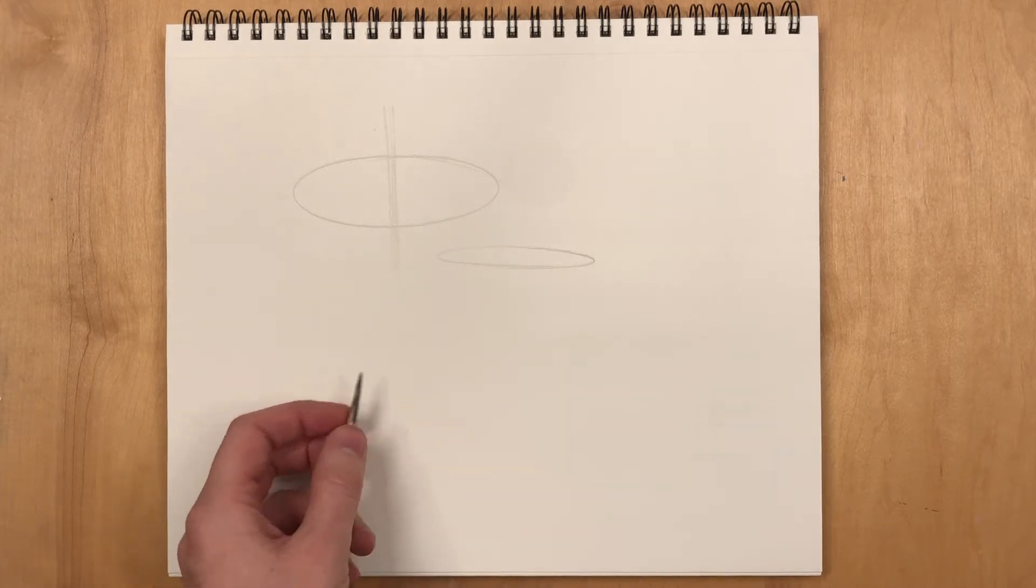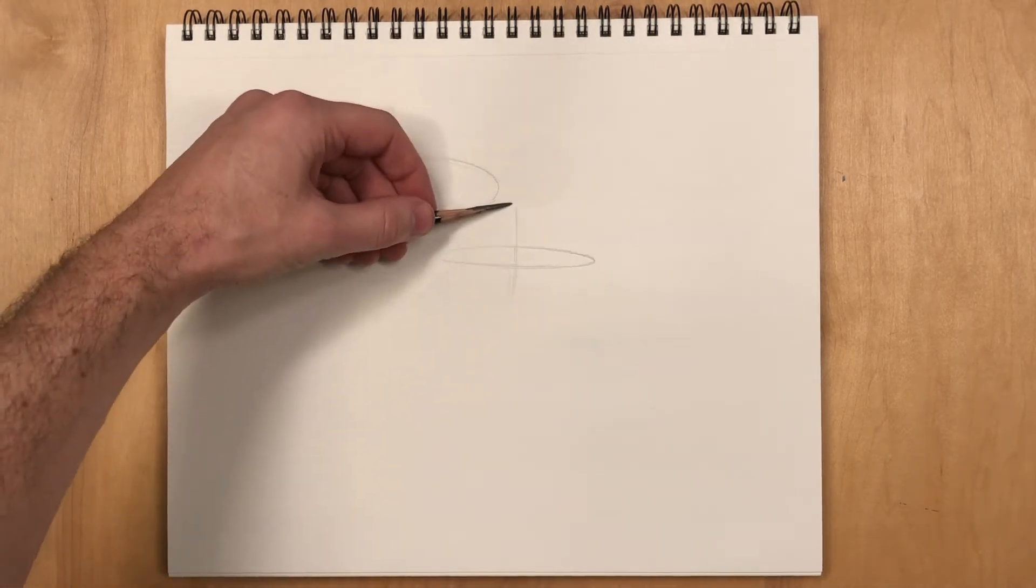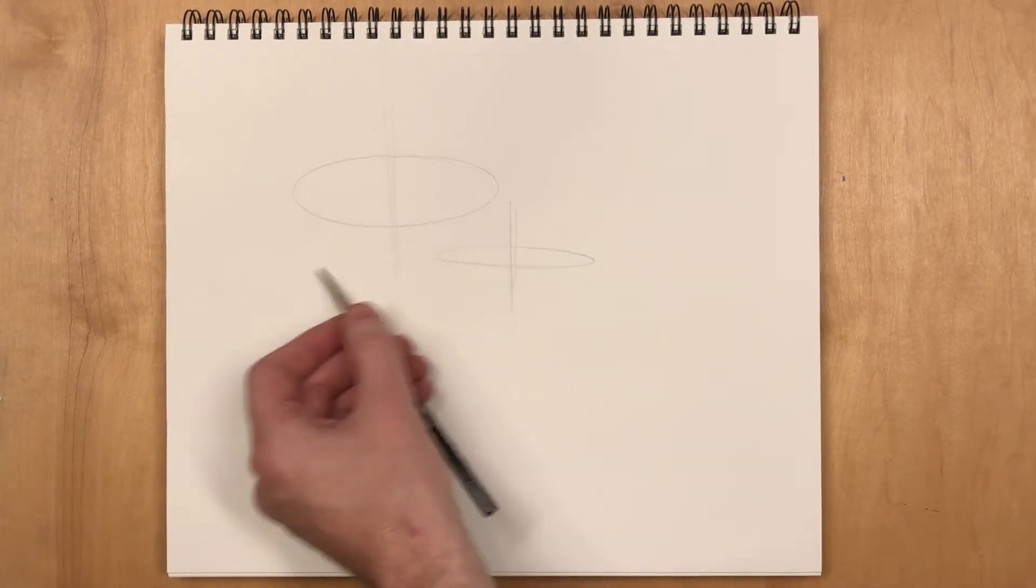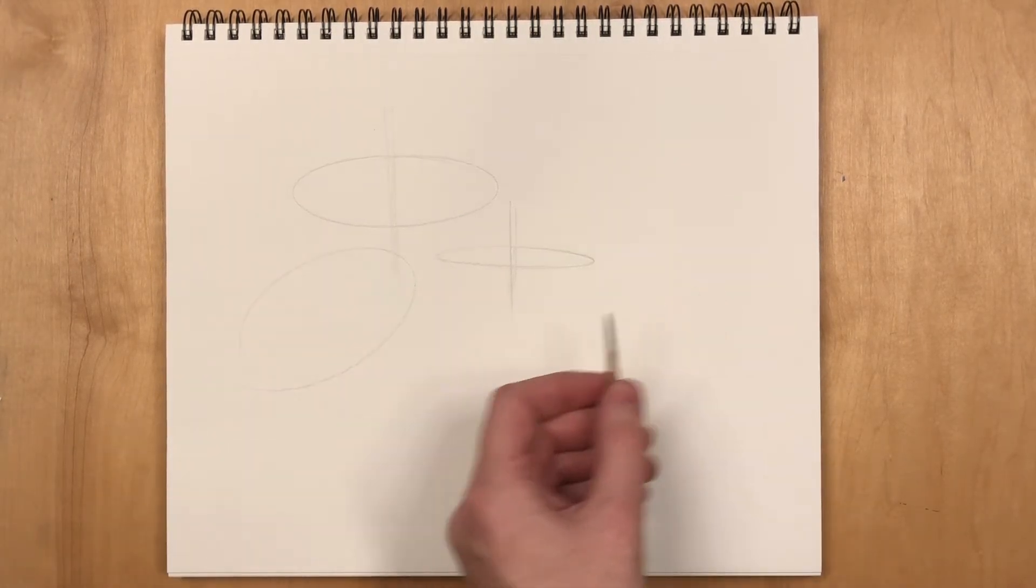There's a thinner ellipse. You'll notice I'm drawing from the shoulder a lot here, especially with the ellipses. I'm swinging that elliptical shape from the shoulder and then I'm committing with the pencil.